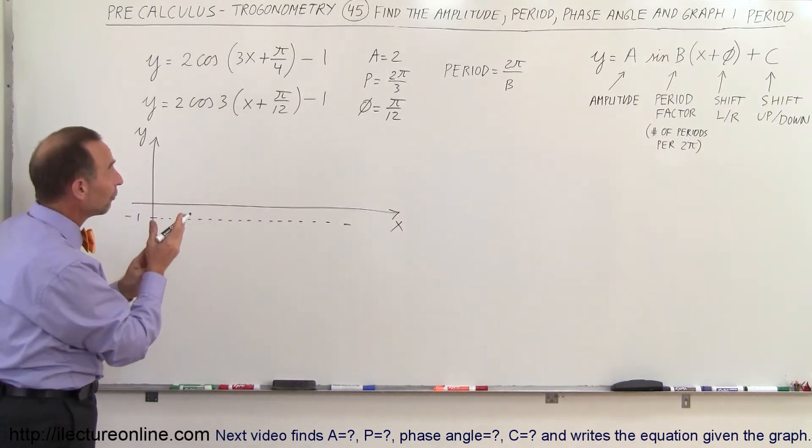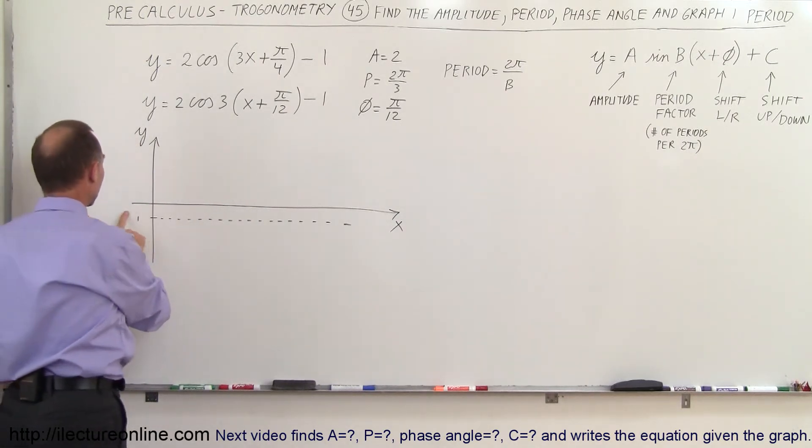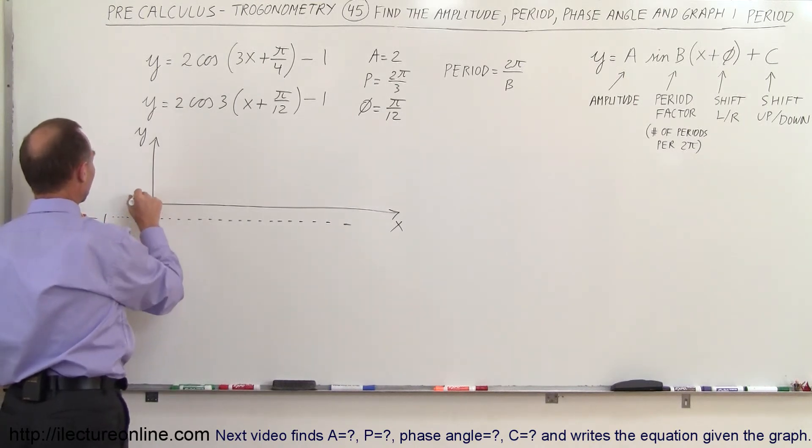Now you see that the whole function shifted to the left π over 12. Let me move this over here minus 1 and so let's say that this here is π over 12.